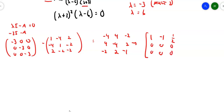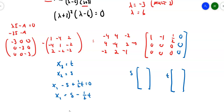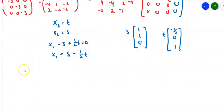Adding the zero column and setting equal to zero, this requires two parameters. Let x3 = t and x2 = s. The top row says x1 minus s plus one-half t equals zero, so x1 = s minus one-half t. Setting up two eigenvectors — one with the s's and one with the t's — gives: [1, 1, 0] and [-1/2, 0, 1]. We'll hang on to those and move to lambda equals 6.